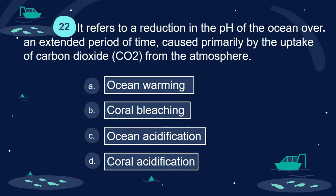Question 22. It refers to a reduction in the pH of the ocean over an extended period of time, caused primarily by the uptake of carbon dioxide (CO2) from the atmosphere. A. Ocean warming. B. Coral bleaching. C. Ocean acidification. D. Coral acidification.